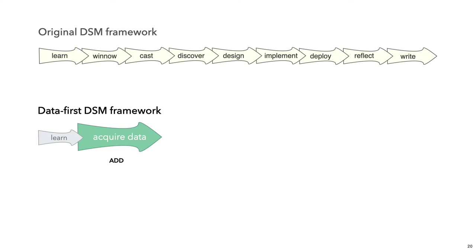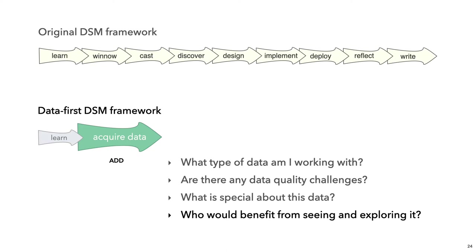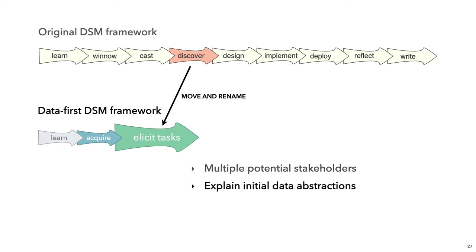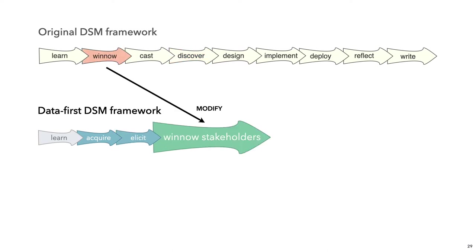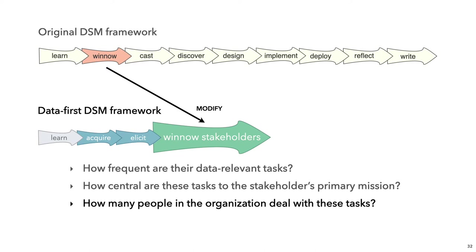Data sketches can provide first insights. What type of data am I working with? Are there any data quality challenges? What is special about this data? And most importantly, who would benefit from seeing and exploring it? We move the discover stage immediately after and rename it to elicit, to emphasize its focus on tasks. The visualizer reaches out to multiple potential stakeholders, explains the initial data abstractions, and learns about unsolved stakeholder needs. The goal of the winnow stage is to assess and prioritize potential stakeholders — how frequent are their data-relevant tasks, how central are these tasks to the stakeholder's primary mission, and how many people in the organization deal with these tasks?